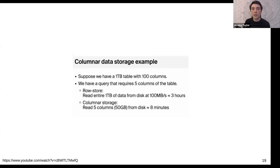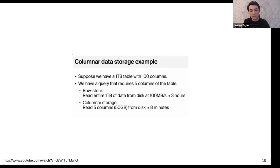Here's an example comparing reading a terabyte of data in a table with 100 columns. If you only need five of those columns — only 1/20th of the data — a row store would force you to read back the entire table, which takes three hours. That's not a small amount of data. Whereas in the columnar case, you can just select those five columns and ignoring any other compression, just having reduced the other 95 columns down to zero can reduce the processing time to eight minutes. That's a dramatic speedup. Anyone who does large-scale aggregations will probably know this already — this is what analytics is all about.